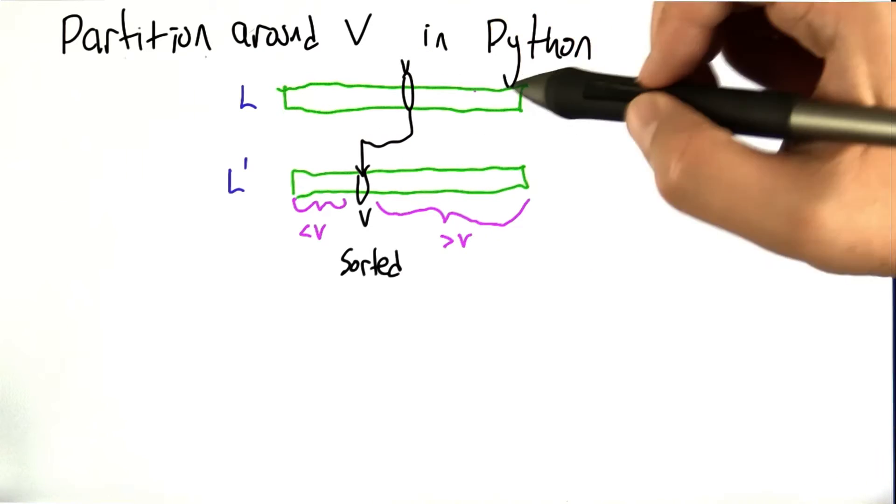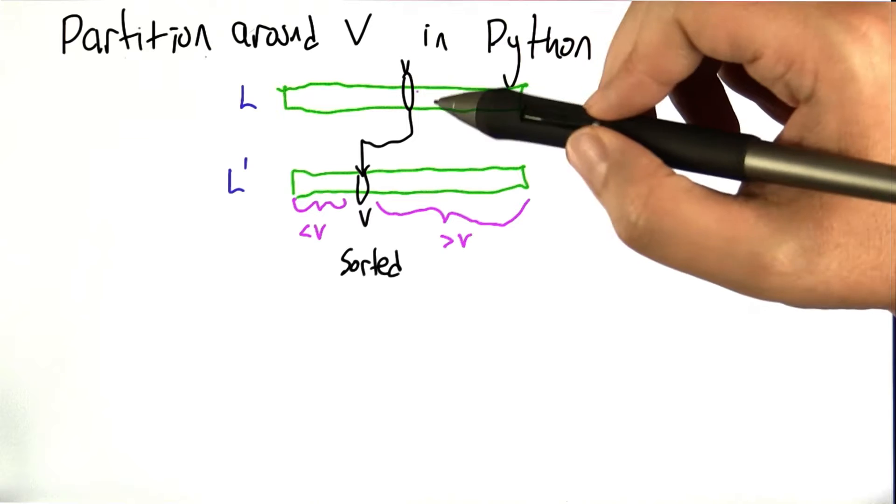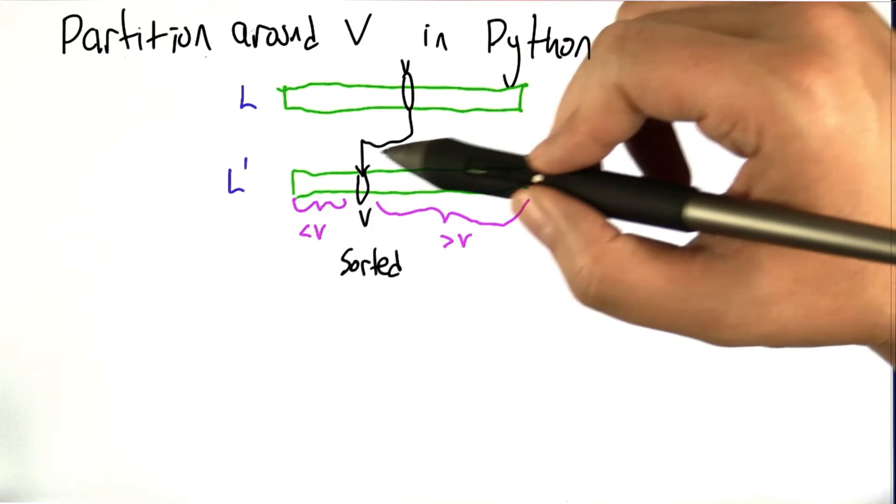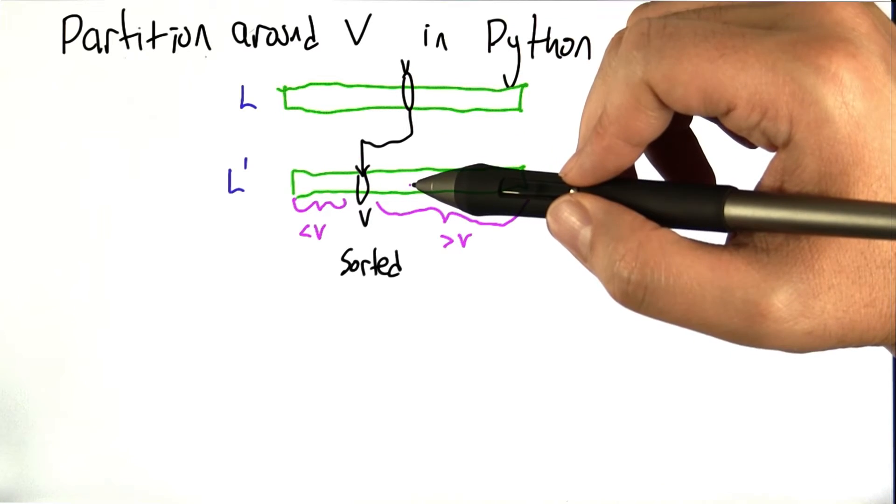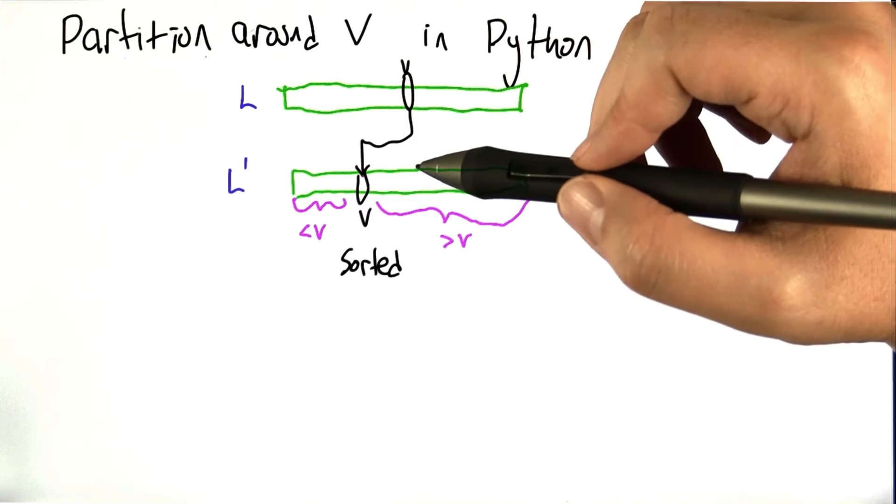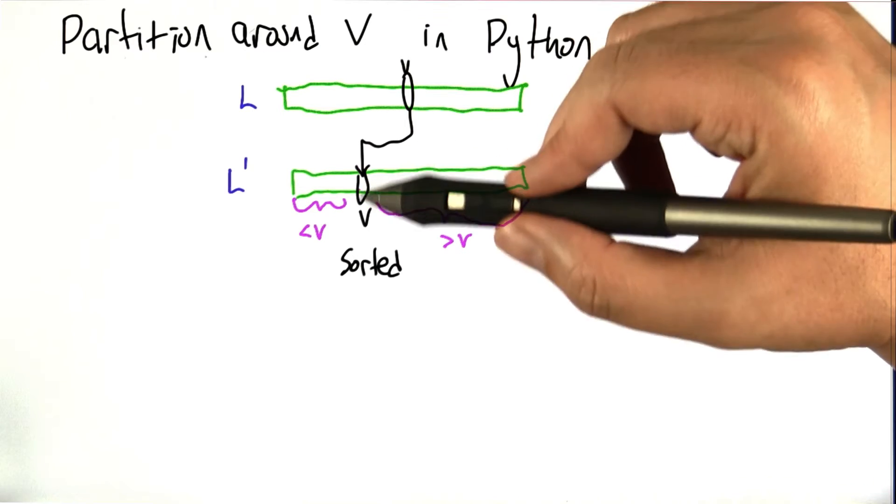So let's imagine we've got some list and it has some value v in it. We know now how we can actually figure out where v will go in a sorted list. Let's actually put it there. Let's actually put that value in the list at that position.